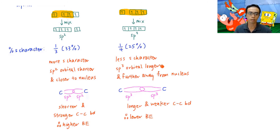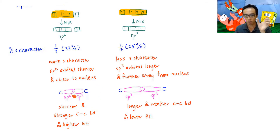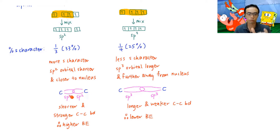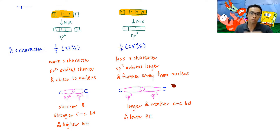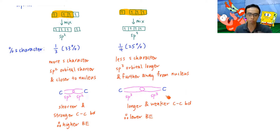The consequence is that if the sp2 orbital is shorter and used to form a bond, the resulting carbon-carbon bond will also be shorter and therefore stronger. Two shorter sp2 hybridized orbitals overlap to form a shorter, stronger bond. Conversely, two longer sp3 hybridized orbitals form a bond that is longer and weaker, meaning the carbon-carbon bond energy in diamond is lower.